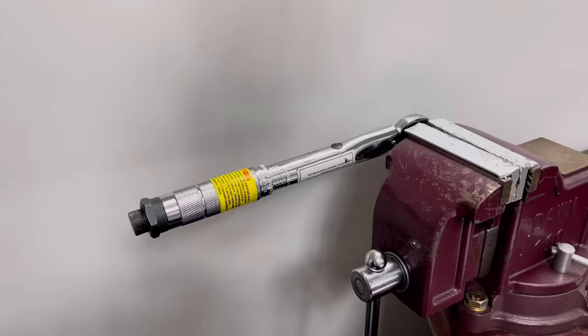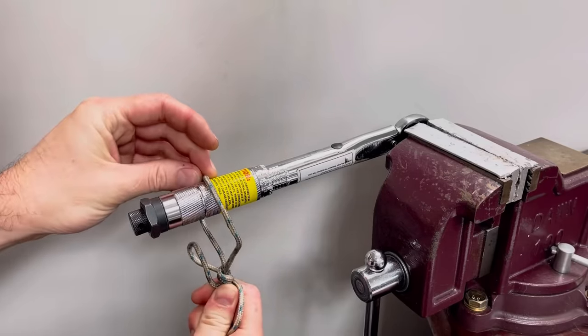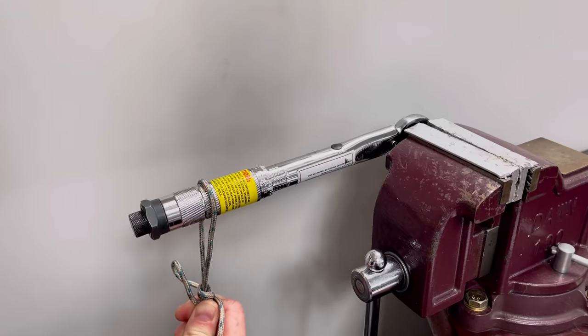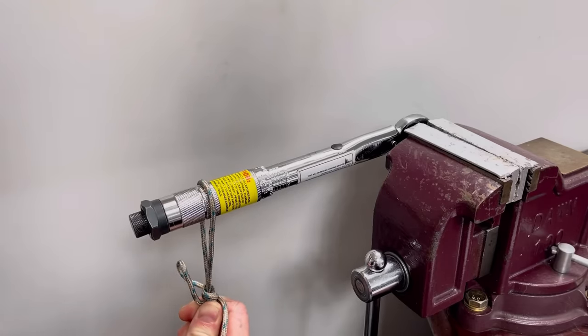So technically, when I hang this weight, at that point, it should only just about click. If it clicks too early, then we'll make an adjustment one way, and if it clicks too late, we'll make an adjustment the other. Here, we're going to apply the weight now.